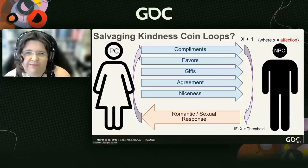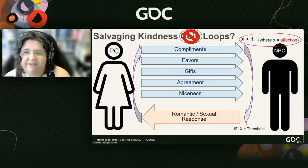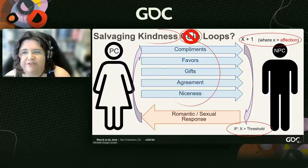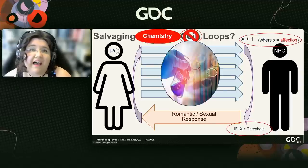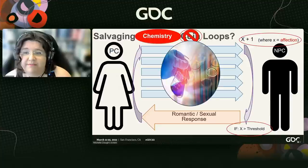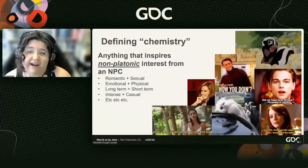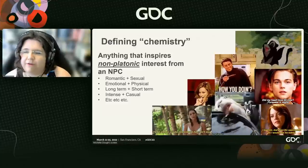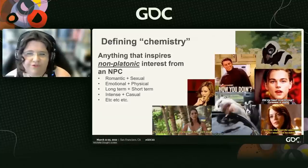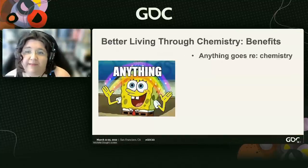So how do we make better wish fulfillment? How do we ditch the coin metaphor, reframe this thing that increases for the NPC, reframe their response, and give players choice beyond bland niceness? I posit that one of the best ways to improve this system is to ground the relationship and the storytelling in chemistry and attraction — which I'm defining here as anything that inspires non-platonic interest, be it romantic, sexual, long-term, short-term, whatever. And this approach has many benefits.